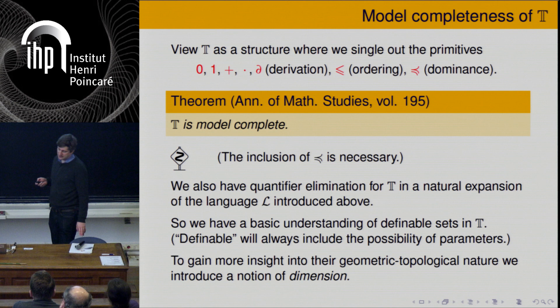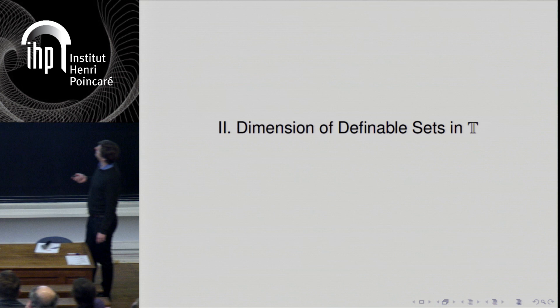The inclusion of the dominance relation is necessary for the model completeness theorem to be true. We also have a quantifier elimination statement in the natural definitional expansion of the language. The upshot is that we have a basic understanding of the definable sets in T. But to get more insight into the nature of these definable sets, one should, as usual in model theory, introduce a notion of dimension — which is what I want to explain now.